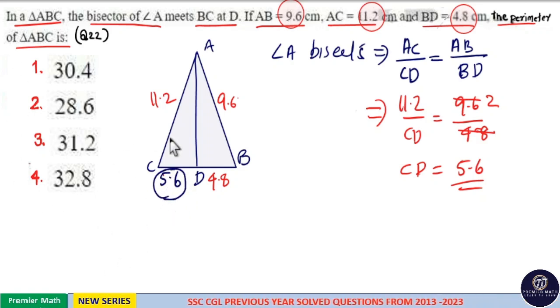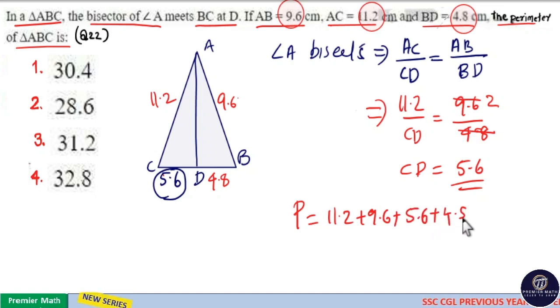Then, perimeter is equal to total 11.2 plus 9.6 plus 5.6 plus 4.8.